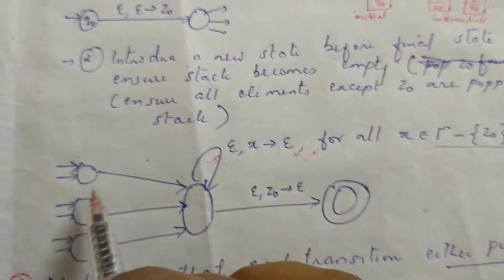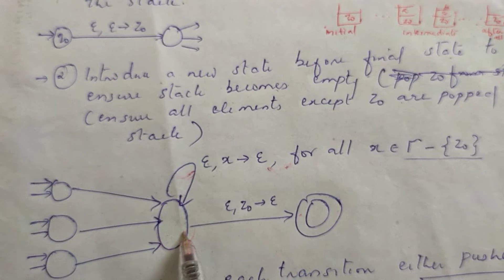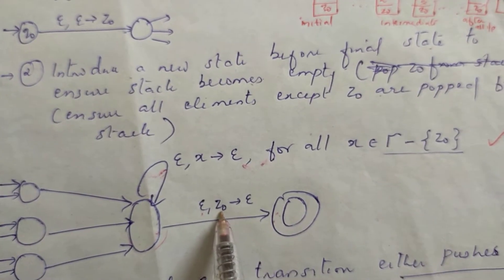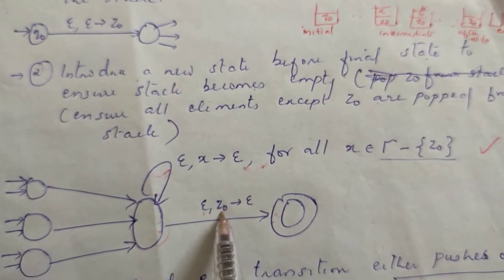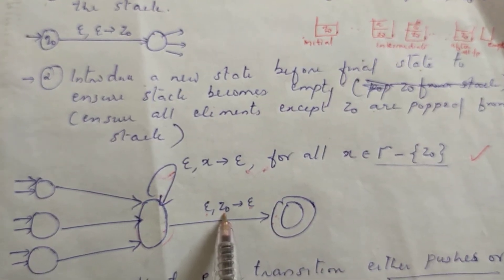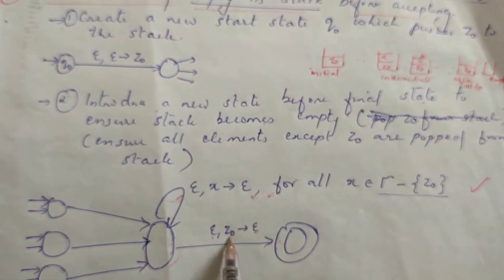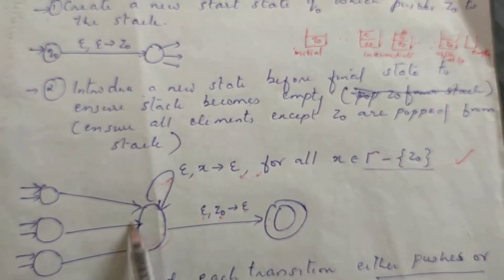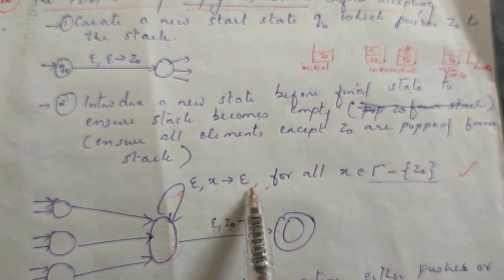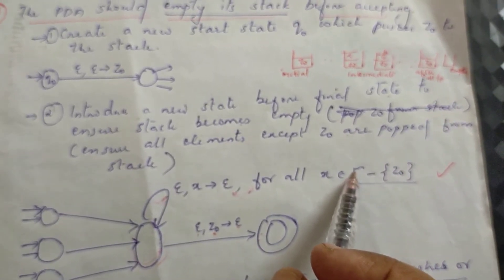We will create a new state in the final state. In the final state, we will put a transition. Without consuming any input, we are popping set0 from the stack. We will not push it, just pop it. We will pop it into the stack. We will create all the stack elements. When we create this state, we will set 0 and all the stack elements, and we will pop it.